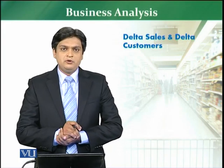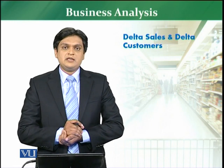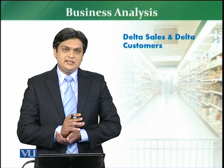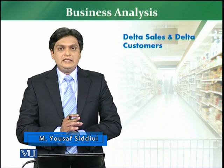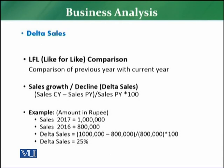The next business analysis we are going to do is about delta sales and delta customers. Normally we talk about sales growth or sales decline, and customer growth and customer decline. Delta is about change — either an increase or decrease in sales or customers. In retail, we use like-for-like comparison, which is the comparison of previous year with current year.